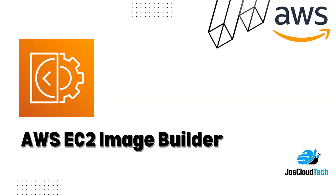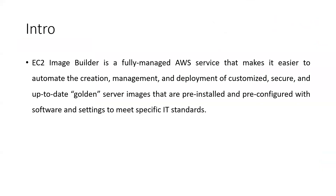Welcome to the channel. In today's video I'll be talking about AWS EC2 Image Builder — what new things are being introduced, how we can utilize it, and its basic advantages. Image Builder is a fully managed AWS service that helps automate the creation, management, and deployment of customized images, also known as golden server images, where you can pre-install or pre-configure software like JDK or any framework. The image is ready to go with those services already installed, and it is secure — you can control which versions are being utilized.